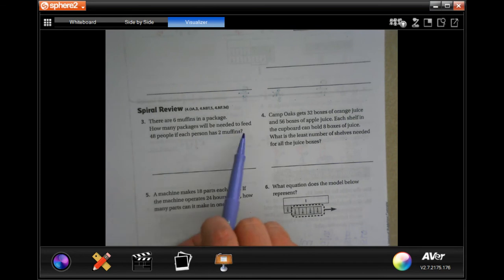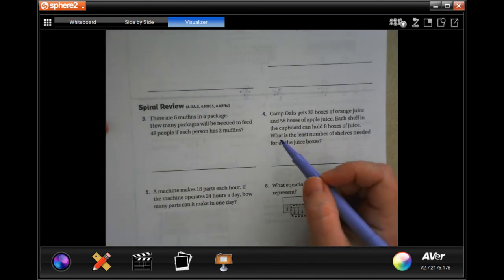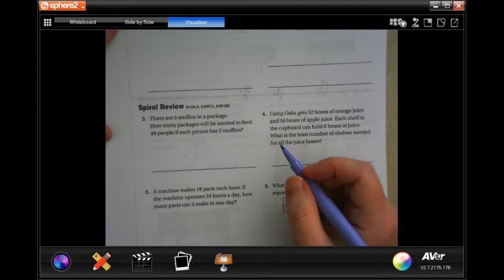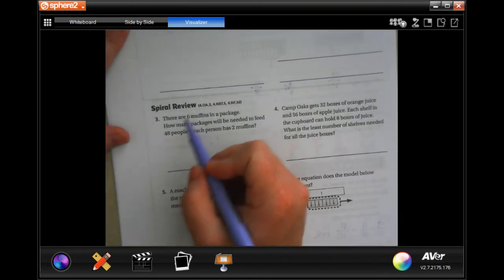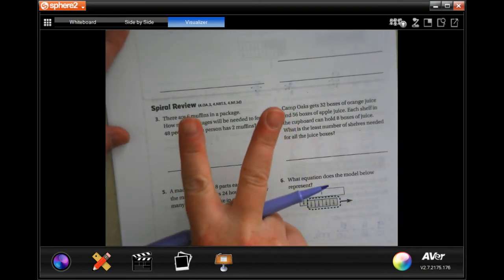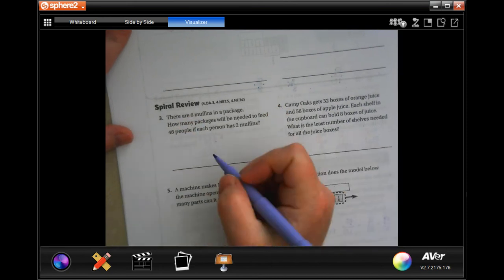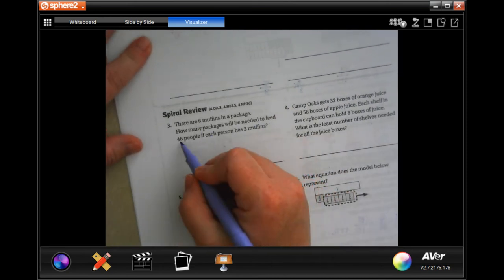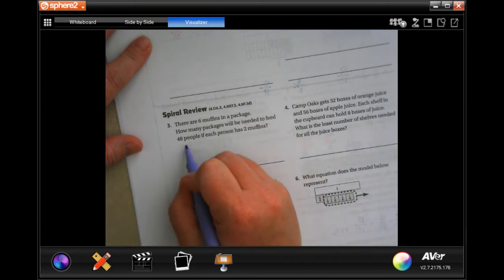There are six muffins in a package. How many packages will be needed to feed 48 people if each person has two muffins? We need to get from six to 48 two times. So we know that six times eight is 48. So now I'm going to need eight packages, but I have to do that again.